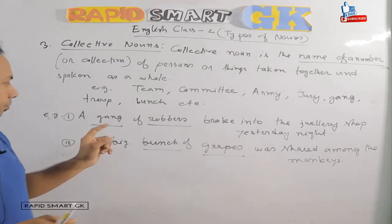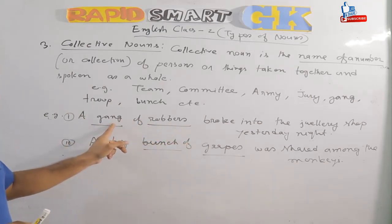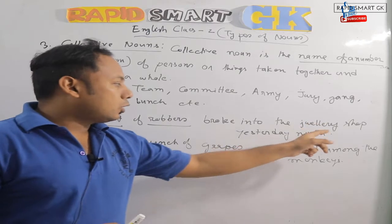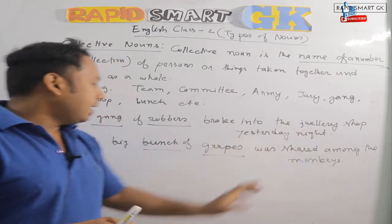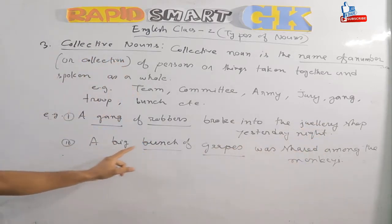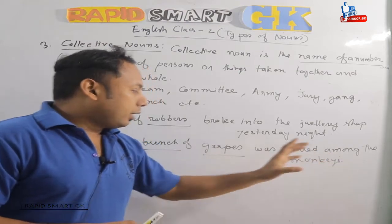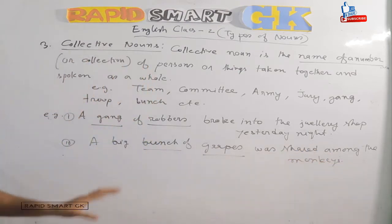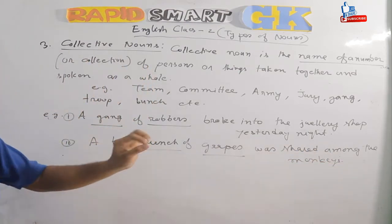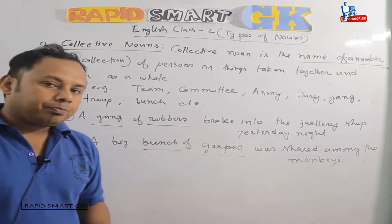For example: 'A gang of robbers broke into the dealer's shop yesterday night.' Another example: 'A big bunch of grapes was shared among the monkeys.' These are examples of collective nouns used in sentences.